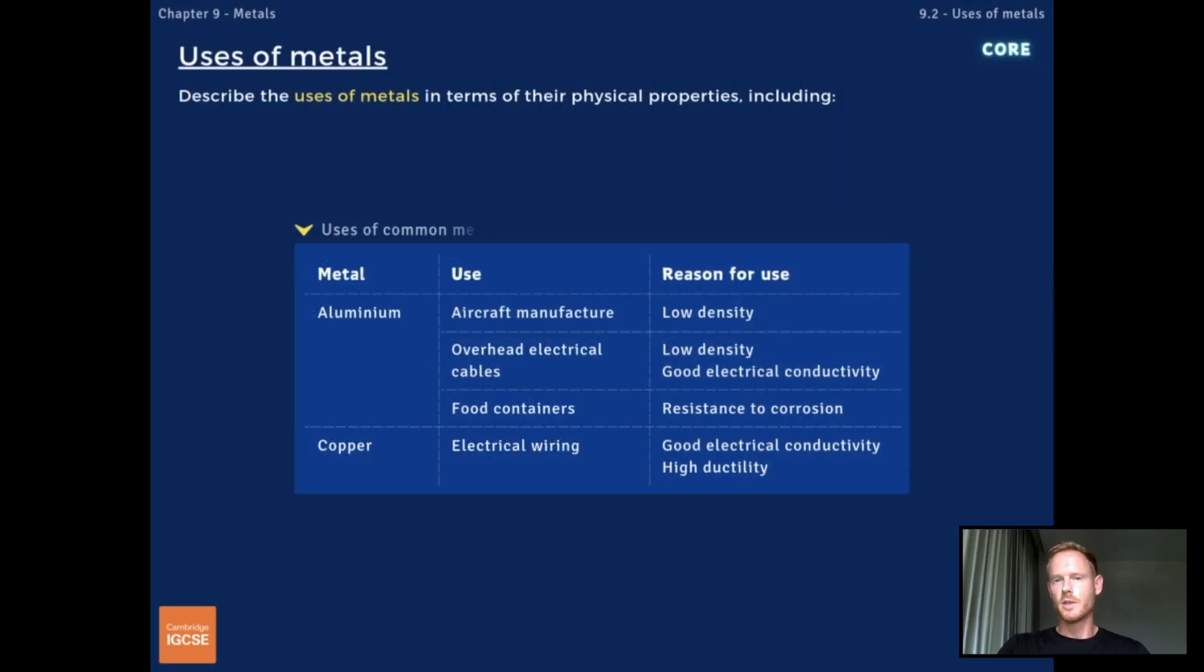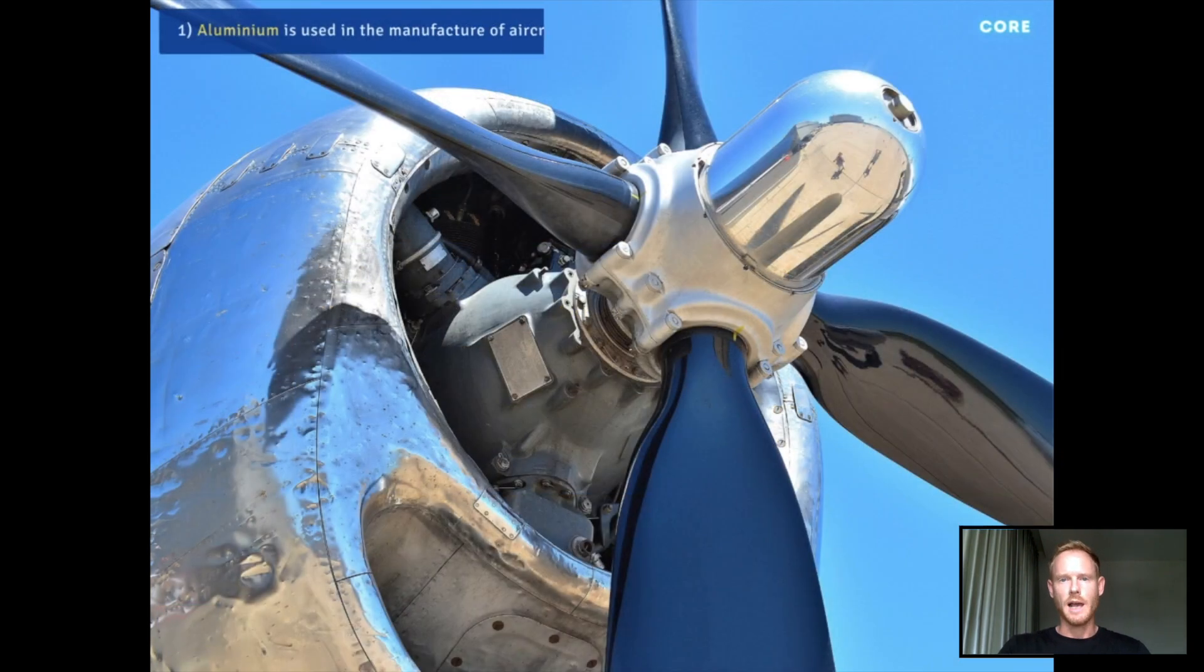You need to describe some of the uses of metals in terms of their physical properties. Number one, aluminium is used in the manufacture of aircraft because of its low density.